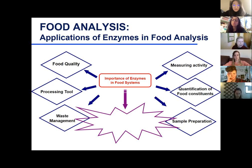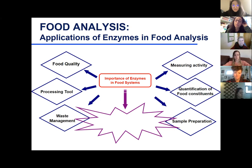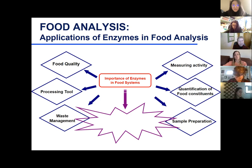Do you remember what enzyme was used in fiber analysis? We have to get rid of protein — so protease is used. And the other thing is starch: we don't want to count starch as dietary fiber unless it's truly resistant starch. So we use amylases to break down the starch to glucose so it can be easily solubilized and washed away.